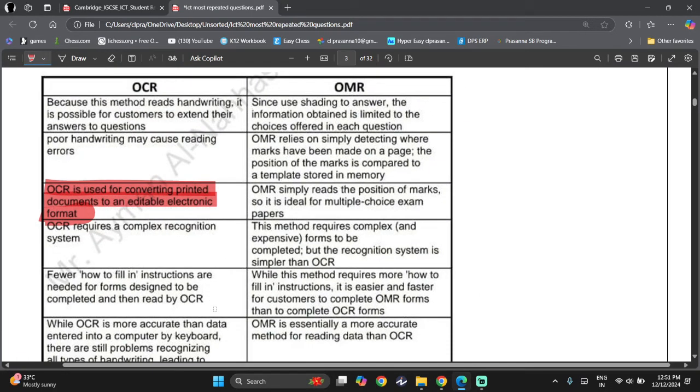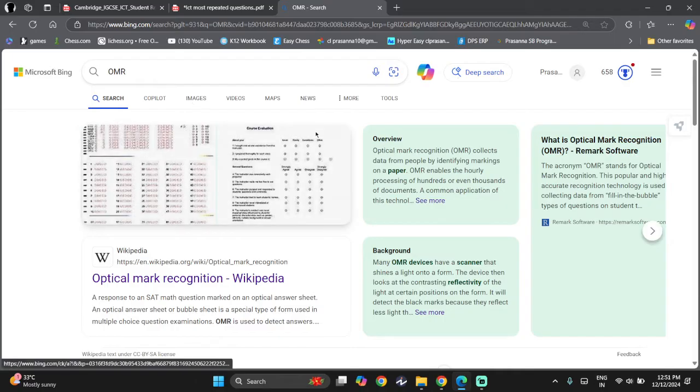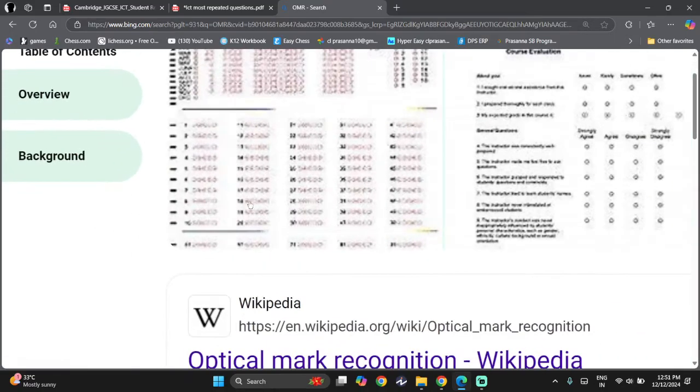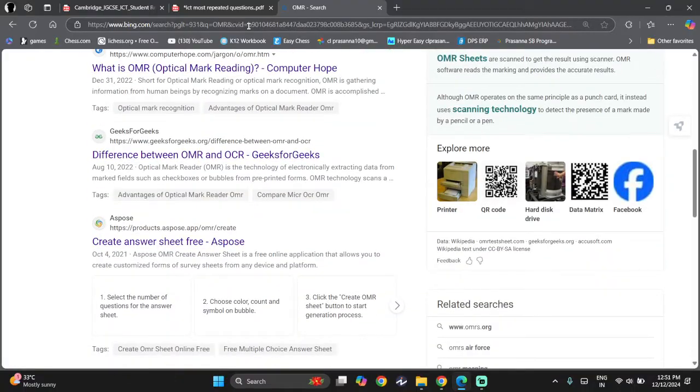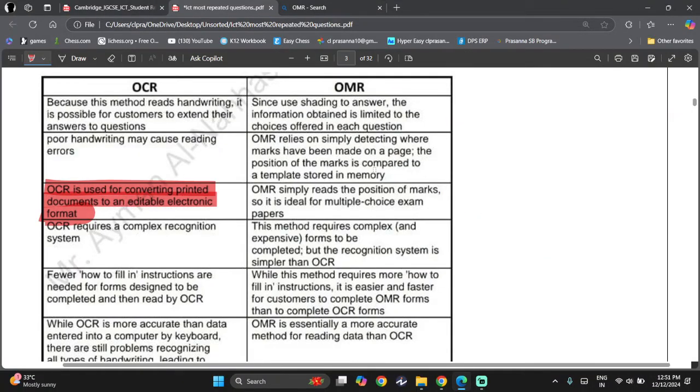Fewer how-to-fill-in instructions are needed for forms designed to be completed and then read by OCR. While OCR is more accurate than data entered into a computer by keyboard, there are still problems recognizing all types of handwriting leading to inaccuracies. OMR, so let me just show you OMR, because people do get confused when we are talking about OMR and OCR. So you see, to fill in sheets like this, to read them, that we use OMR.